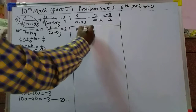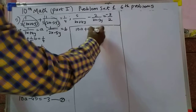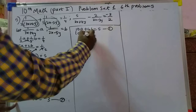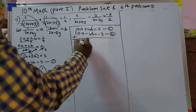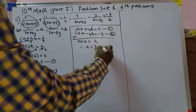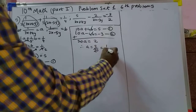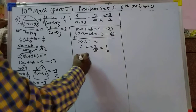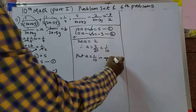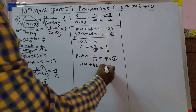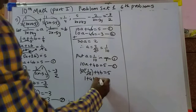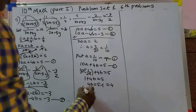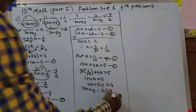Adding equations 1 and 2: 10a plus 4b plus 10a minus 4b equals 5 plus minus 3. The 4b terms cancel, giving 20a equals 2. Therefore a equals 2 by 20 equals 1 by 10. Putting a equals 1 by 10 into equation 1: 10 into 1 by 10 plus 4b equals 5, so 1 plus 4b equals 5, giving 4b equals 4, therefore b equals 1.